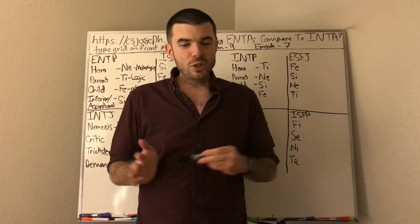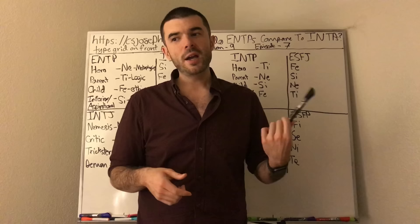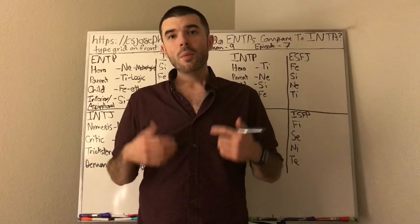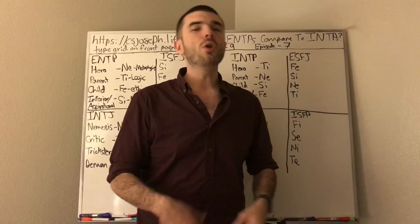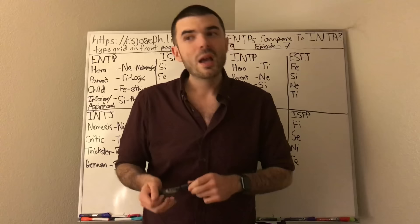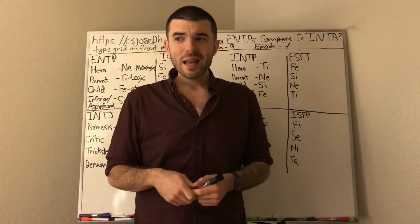So extroverted intuitive thinking perceiver, the ENTP informative initiating movement starter type. It is an intuitive thinker, aka the intellectual, just like the INTP is also an NT intellectual, but its interaction style is not a starter. It is actually behind the scenes, which is informative responding control. Both informative, one of them's initiating, one of them is responding, one of them is movement, one of them is control. Movement means you fly by the seat of your pants, like I always do.